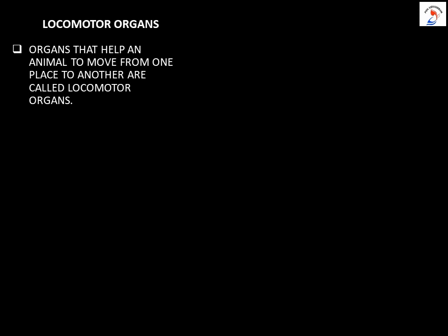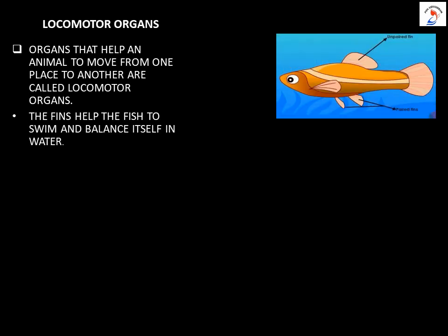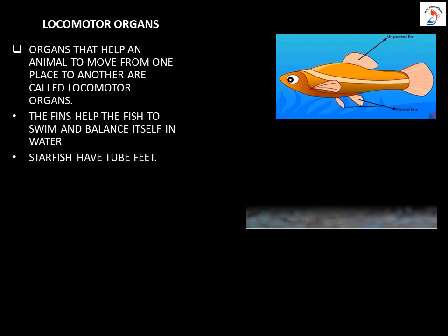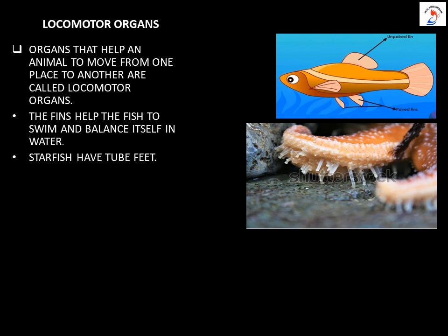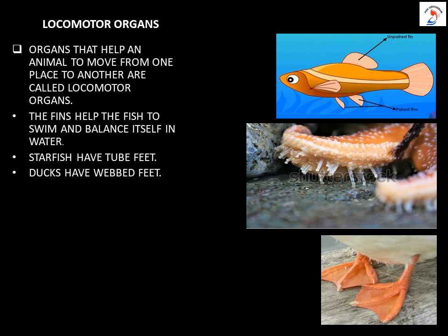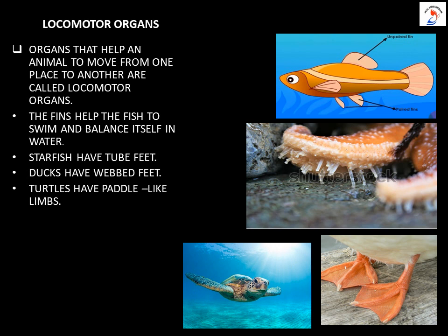The locomotor organs in a fish are its fins, which help the fish to swim and balance itself in water. Starfish have tube feet — you can see those small white tubes in the picture — which are their locomotor organs. Ducks have webbed feet, and turtles have paddle-like limbs. So fins, tube feet, webbed feet, and paddle-like limbs are the locomotor organs of fish, starfish, ducks, and turtles respectively.